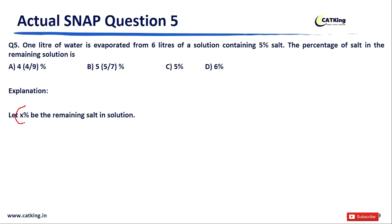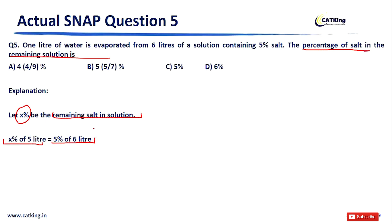Let me explain by taking X percent as the remaining salt percentage in the solution. I know that X percent of 5 liters equals 5 percent of 6 liters, because 1 liter of water is evaporated. The salt content remains the same, but the volume changes from 6 liters to 5 liters — so the percentage of salt will definitely increase.